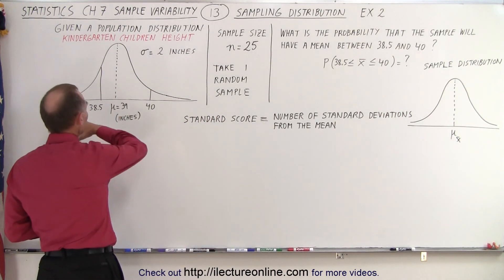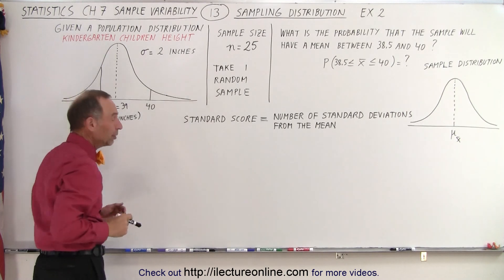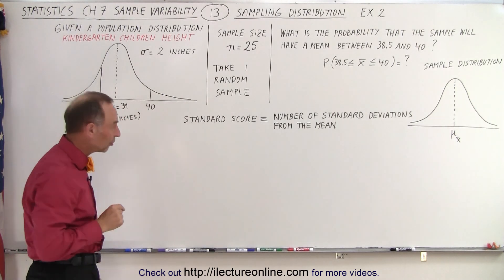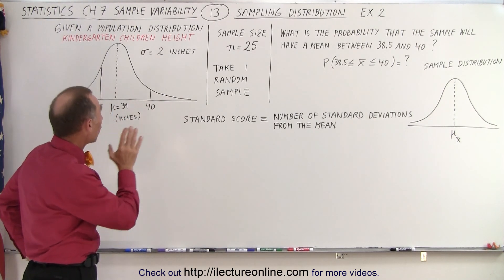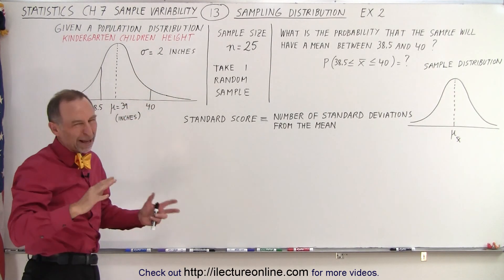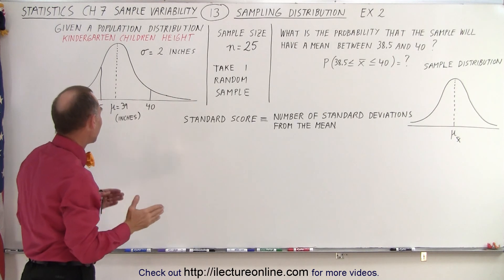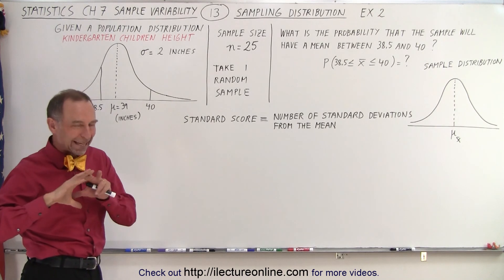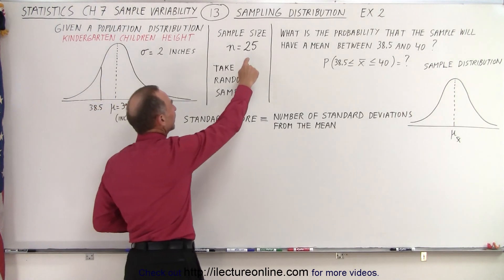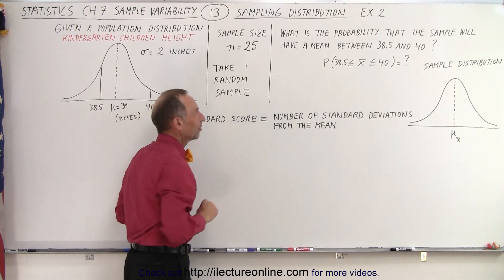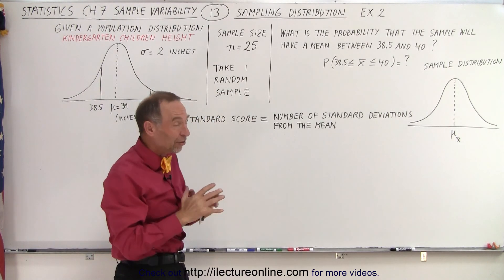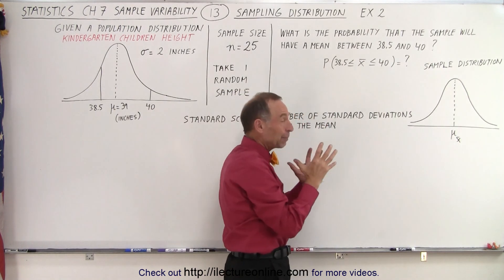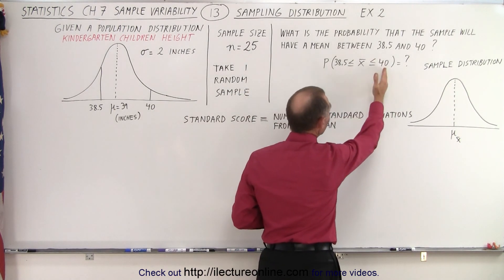We're dealing with a number of kindergarten children and specifically their height. It turns out that the average height — the mean — is 39 inches, with a standard deviation of 2 inches, so that about 68% of all kindergarten children have a height somewhere between 37 and 41 inches. We're going to take a single sample of 25 kindergarten children, and we want to know the probability that the average height of that sample will fall somewhere between 38.5 and 40 inches.